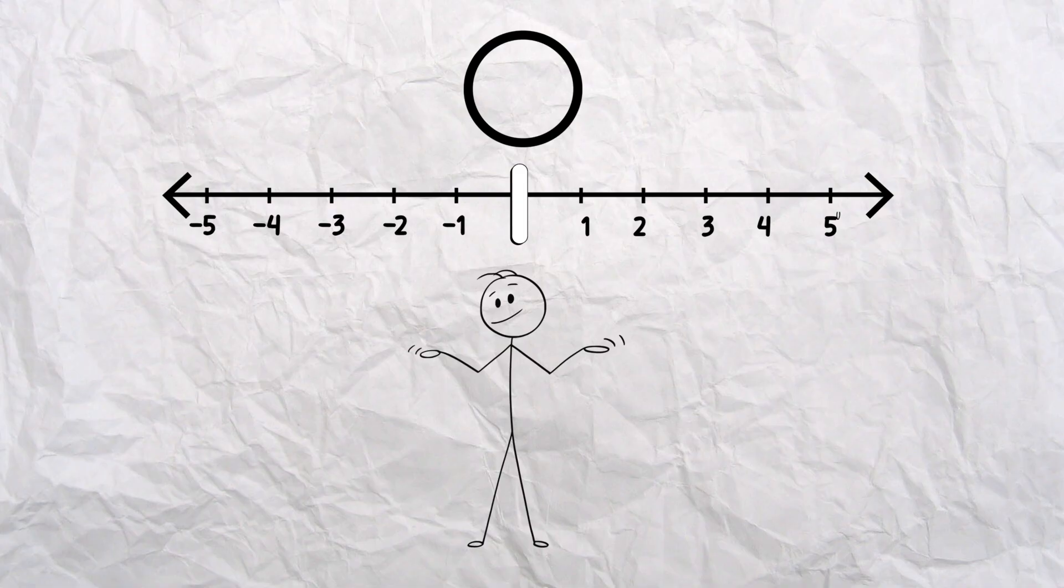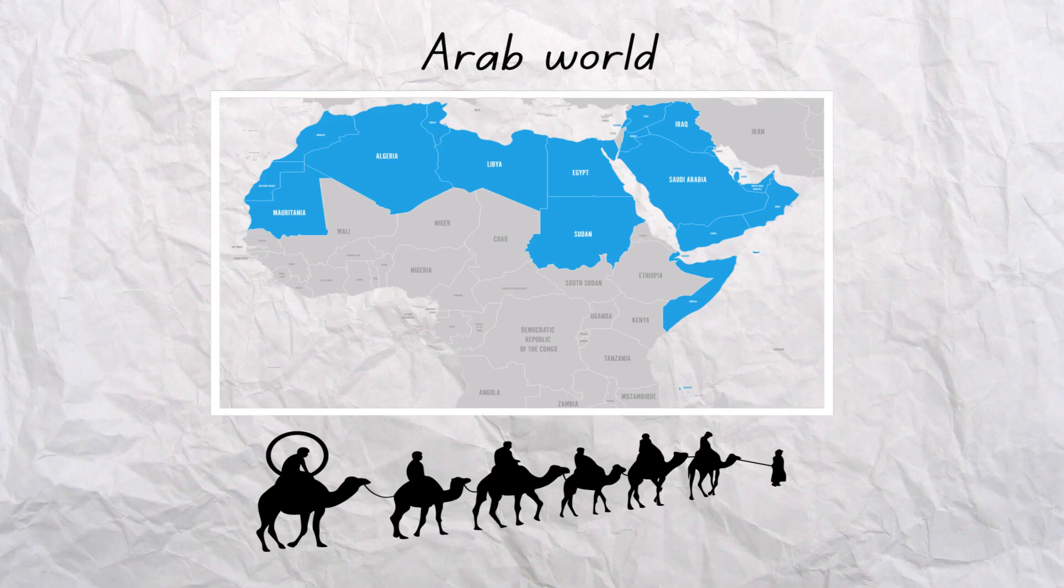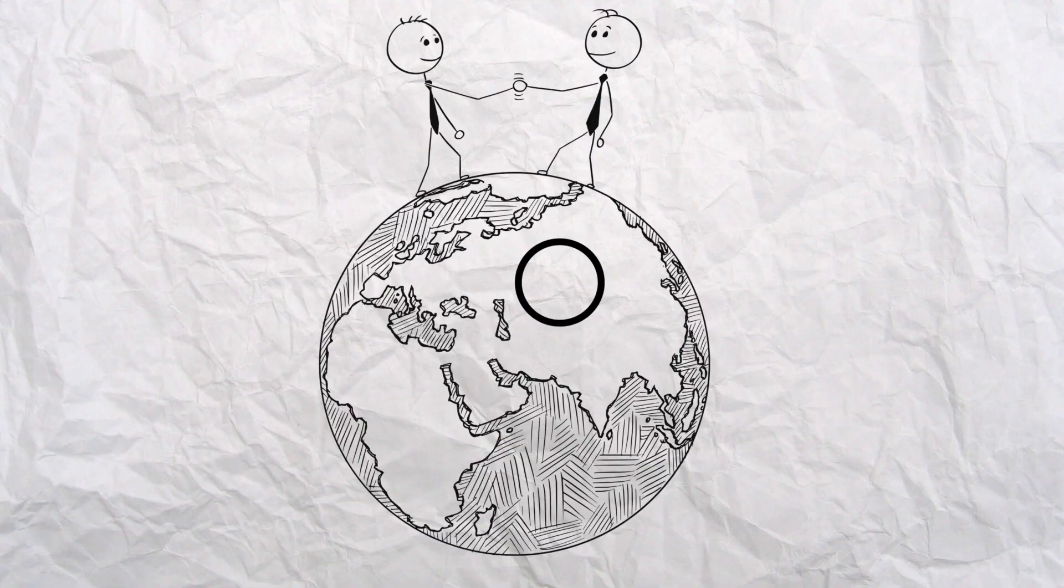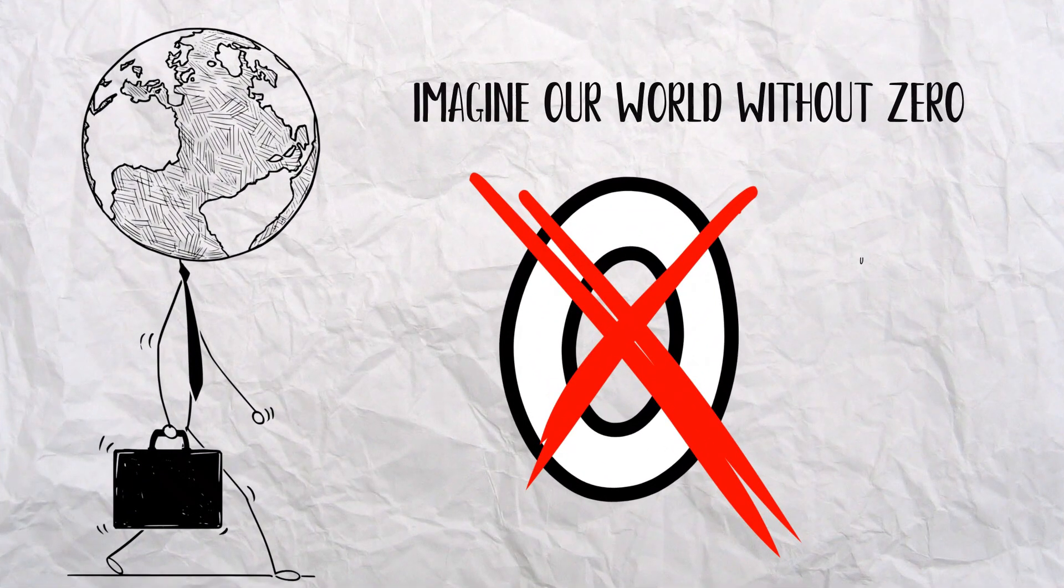But these mathematicians gave it a symbol. A small, round circle that could hold power. That tiny symbol traveled through the Arab world, where scholars refined it. Eventually, it reached Europe, where it was called cipher, meaning secret code. And soon, it unlocked the entire world of modern mathematics.